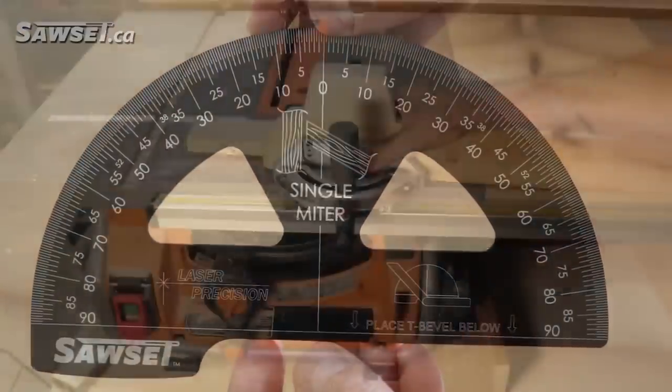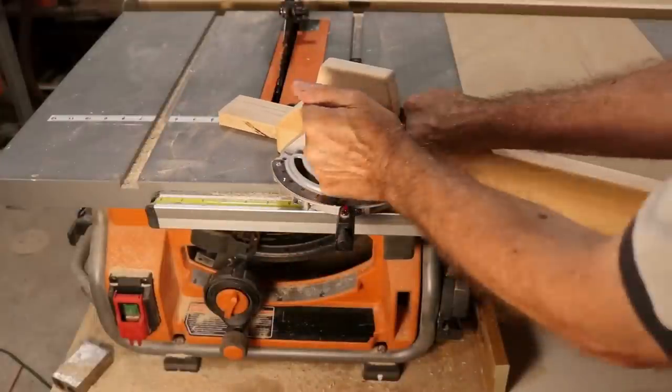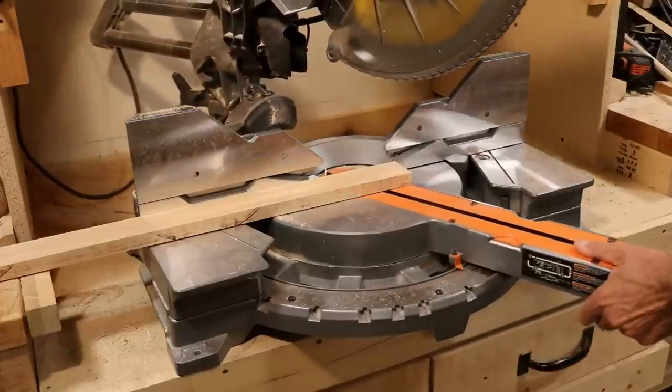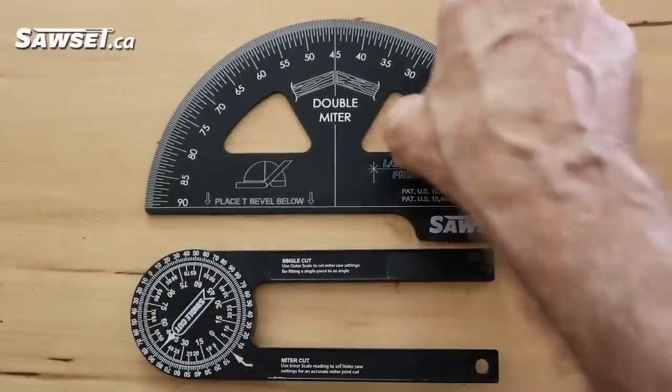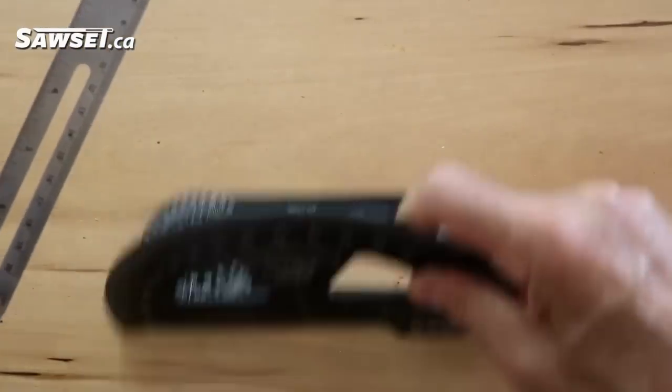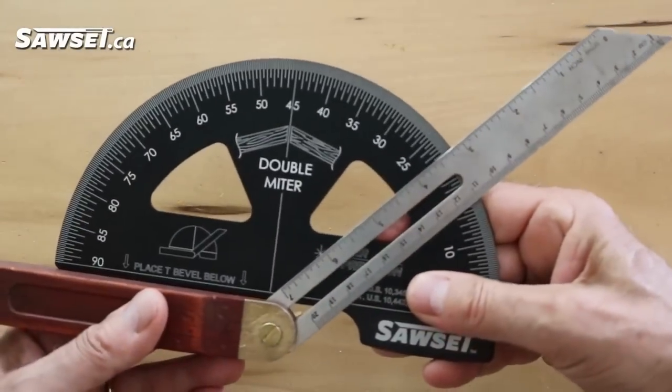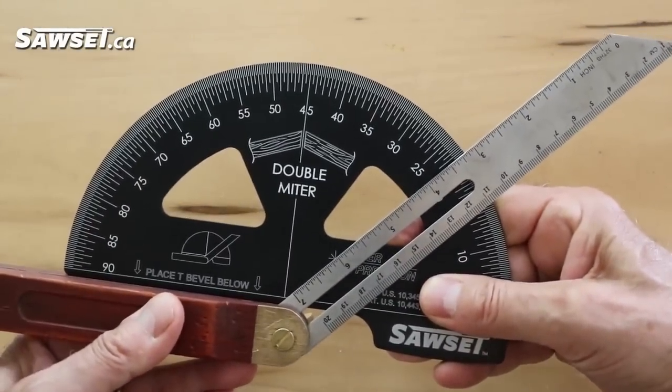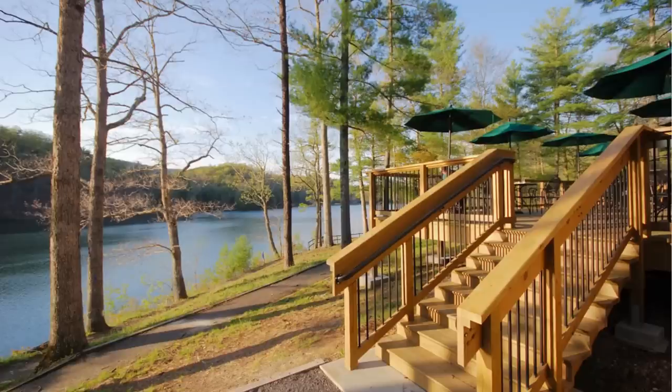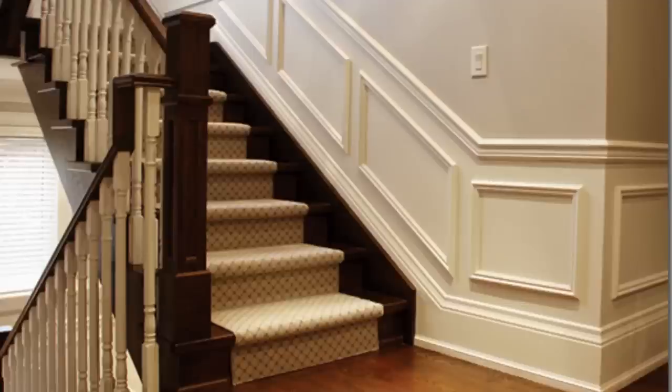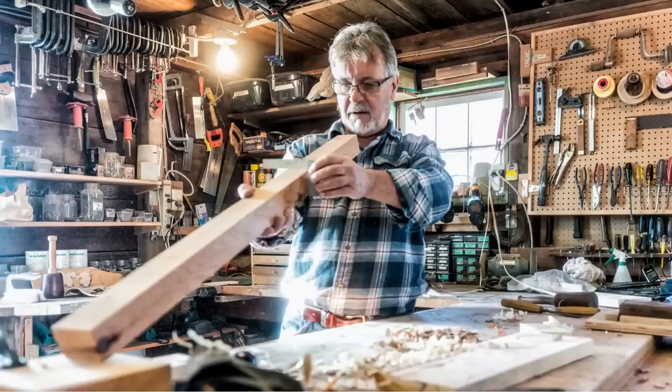It provides accurate saw settings without the need for complicated calculations. Crafted from robust ABS plastic, it features an easy-to-read 8.5-inch scale with screen-printed text and a bevel stopper. It is calibrated to work seamlessly with your miter saw, ensuring precise measurements with every use. With Saw Set, achieving the correct angles for a variety of carpentry projects is simple.